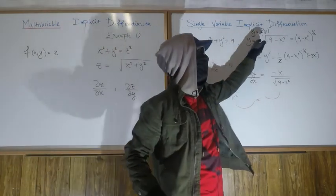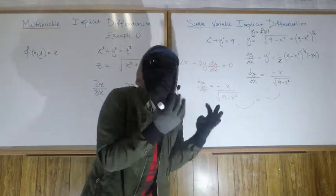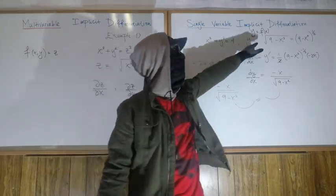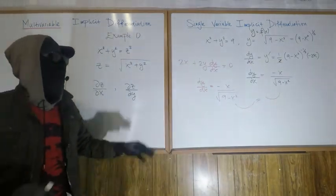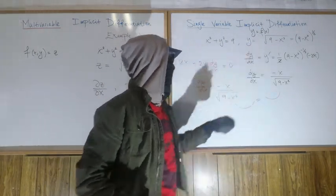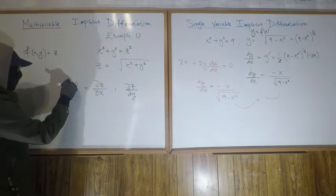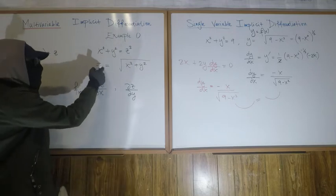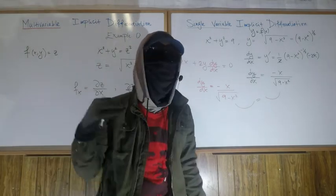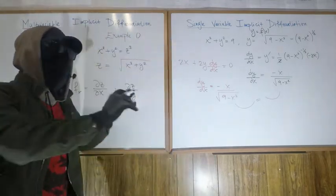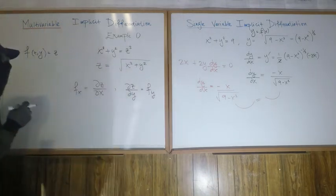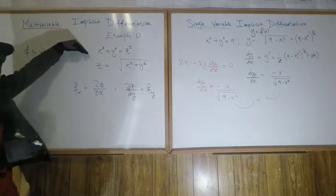When we're able to explicitly define our function and write z equals f(x, y), then dz/dx is simply fx — the partial with respect to x — and dz/dy is fy. You don't need implicit differentiation when you can isolate z; you just compute the partials directly.